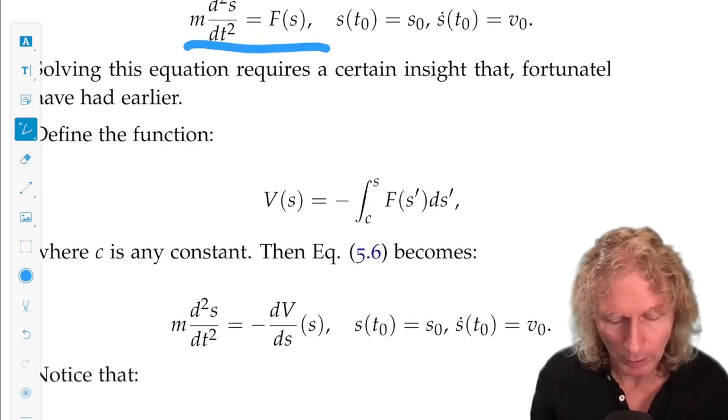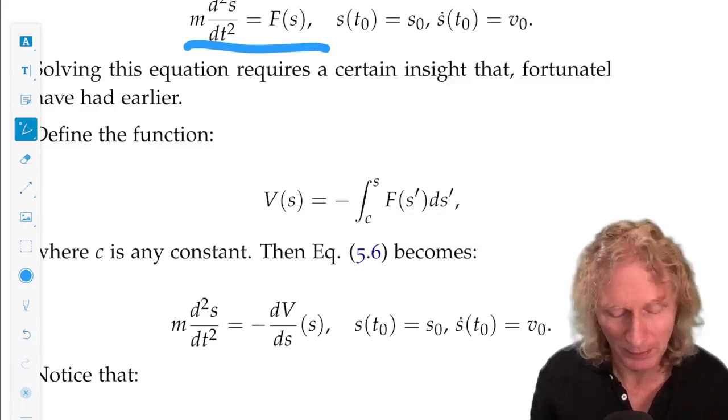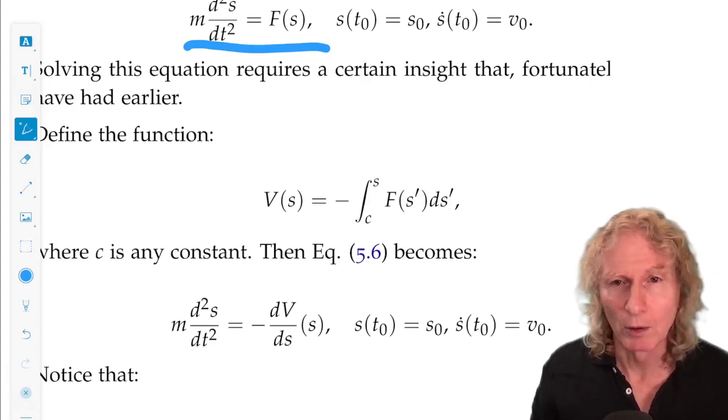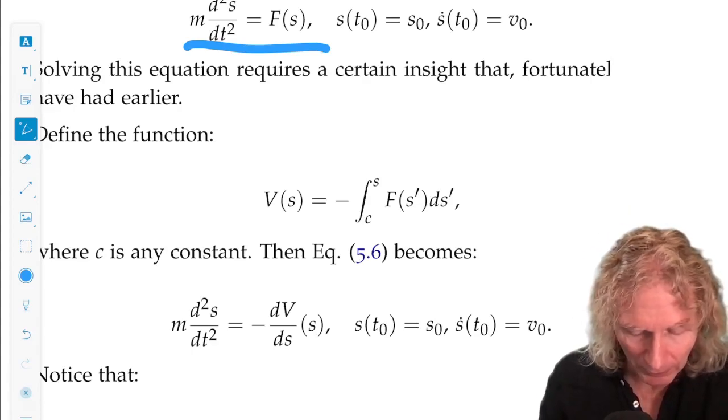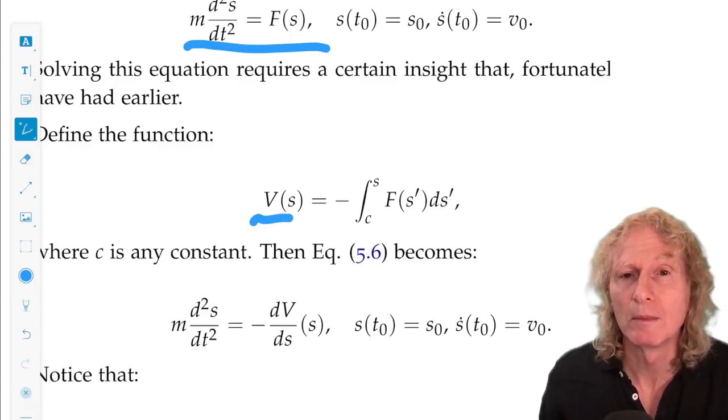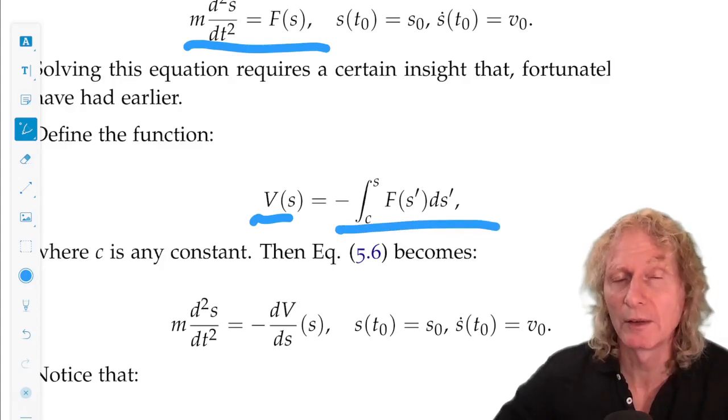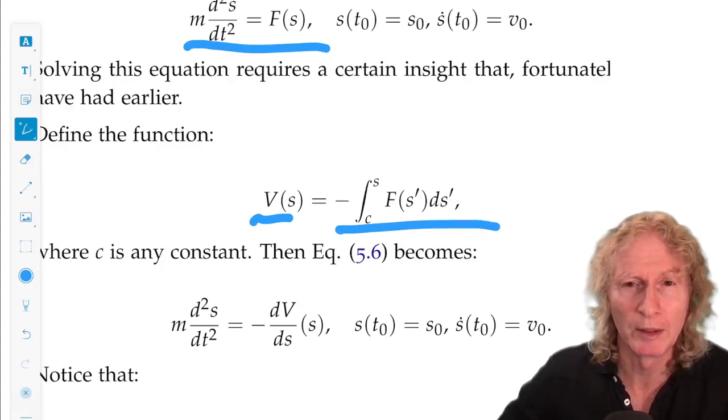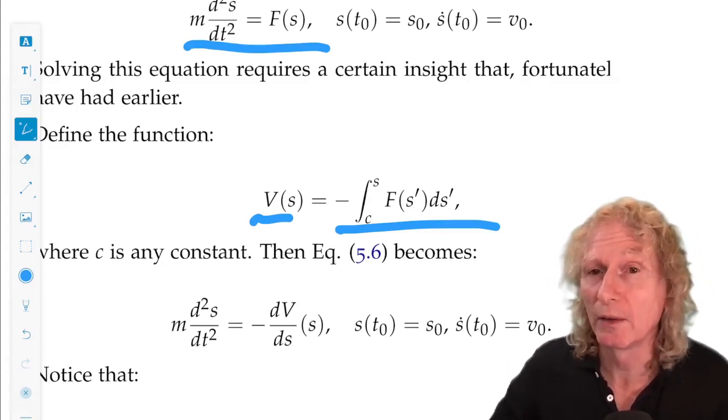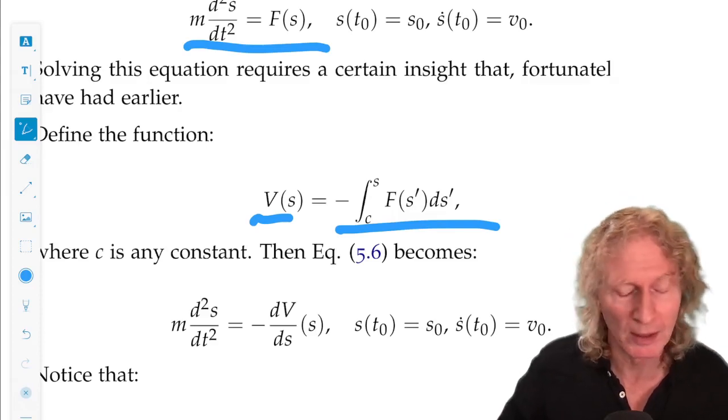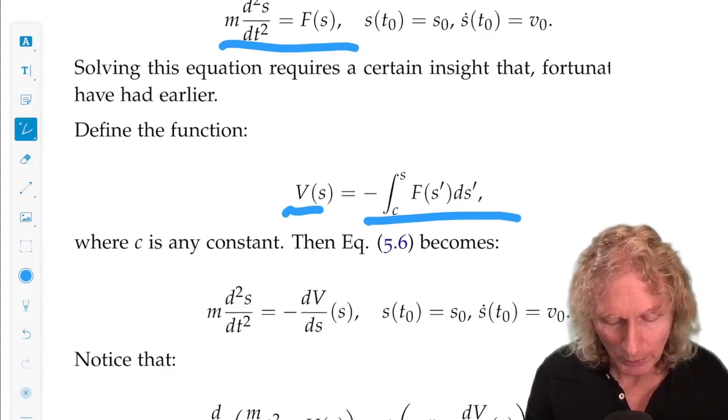And we're going to define a new function. What motivates us to do that? We're going to learn about this as we go along. There's some physical motivations, but for now, let V(s) be the negative indefinite integral. We're going to put a constant at the lower limit, so minus integral from c to s. c is an arbitrary constant, anything right now. F(s')ds'.